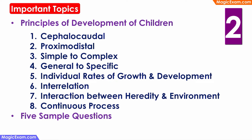Under the principles of development of children, we will cover 8 important principles because these are the most frequently asked principles in various question papers. These are cephalocaudal, proximodistal, simple to complex, general to specific, individual rates of growth and development, interrelation, interaction between heredity and environment, and development is a continuous process.